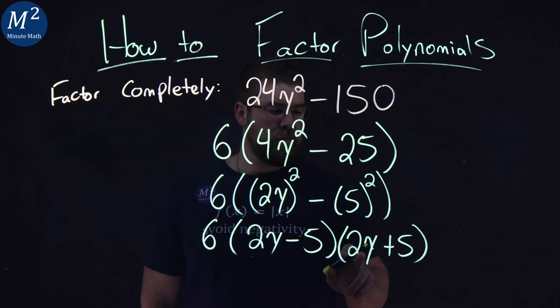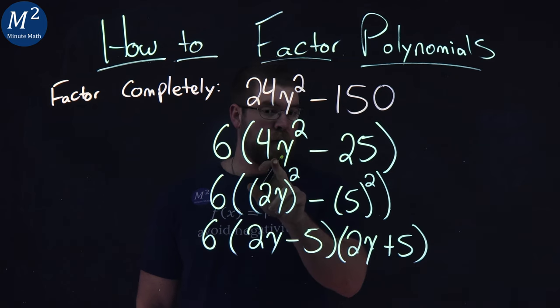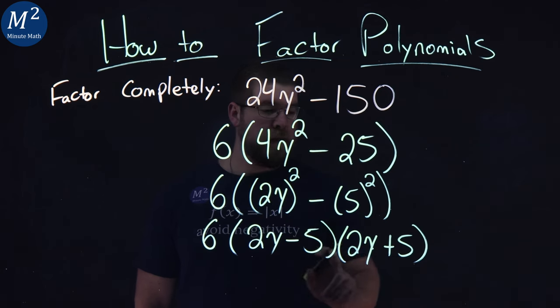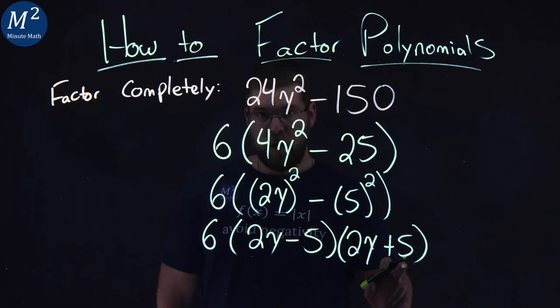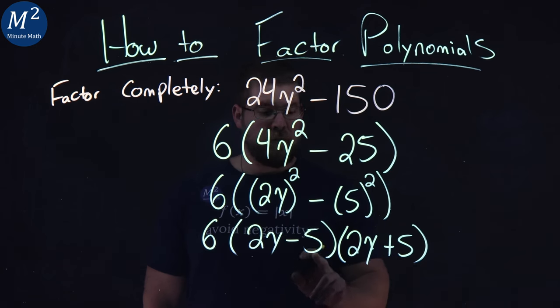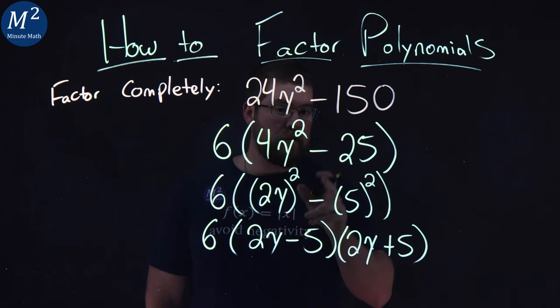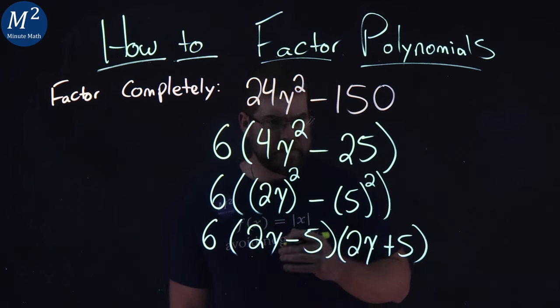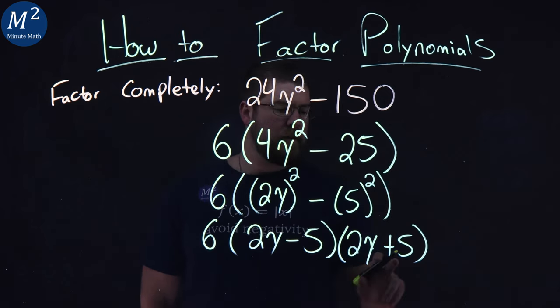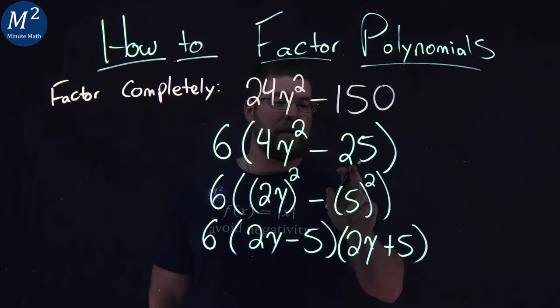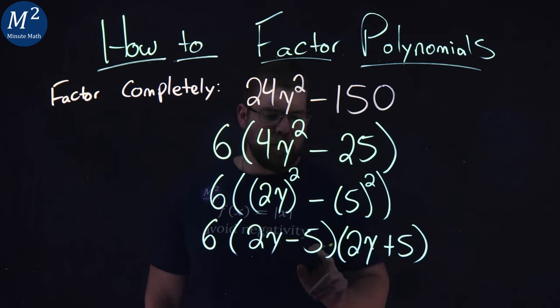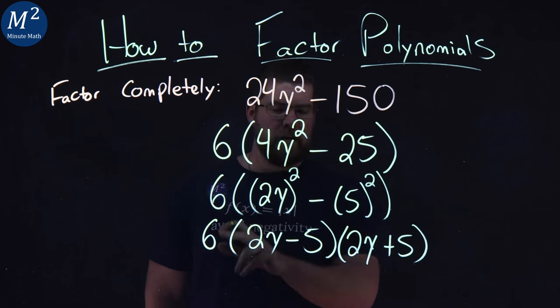And we can quickly check and see how that works here. We see 2y times 2y gives us that 4y squared. 2y times 5 is 10y. Negative 5 times 2y is negative 10y. They cancel each other out, so we have nothing there in the y section. And then negative 5 times positive 5 gives me negative 25.